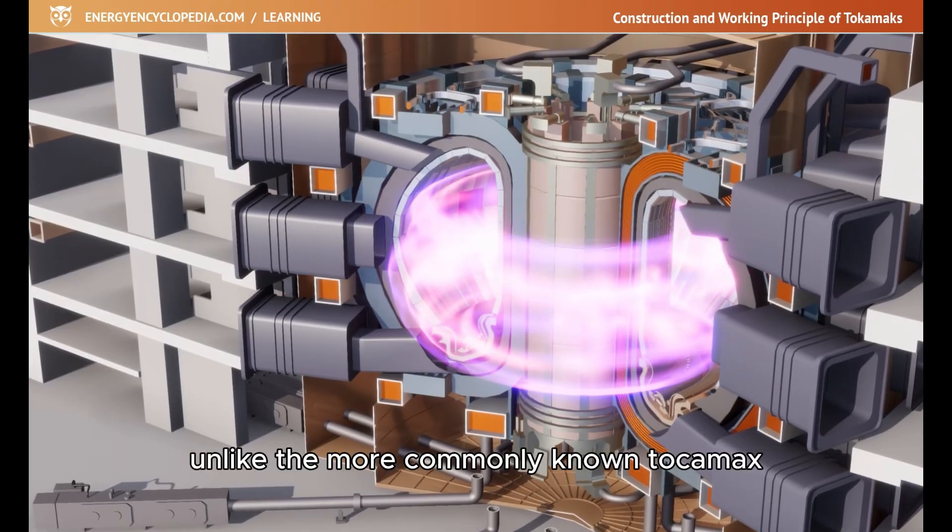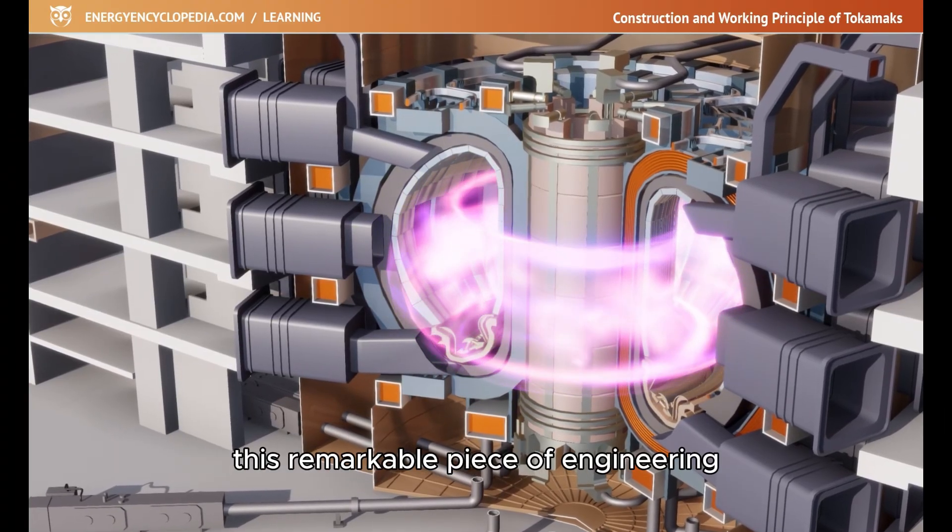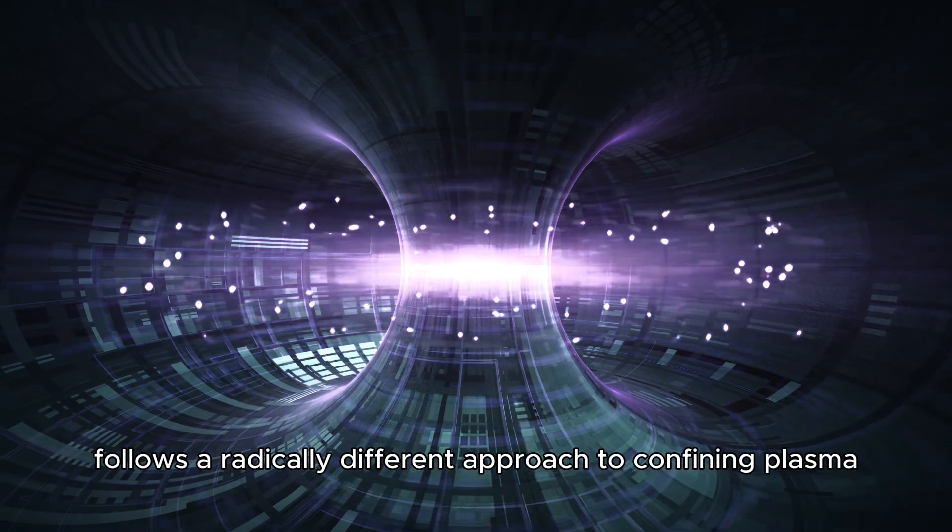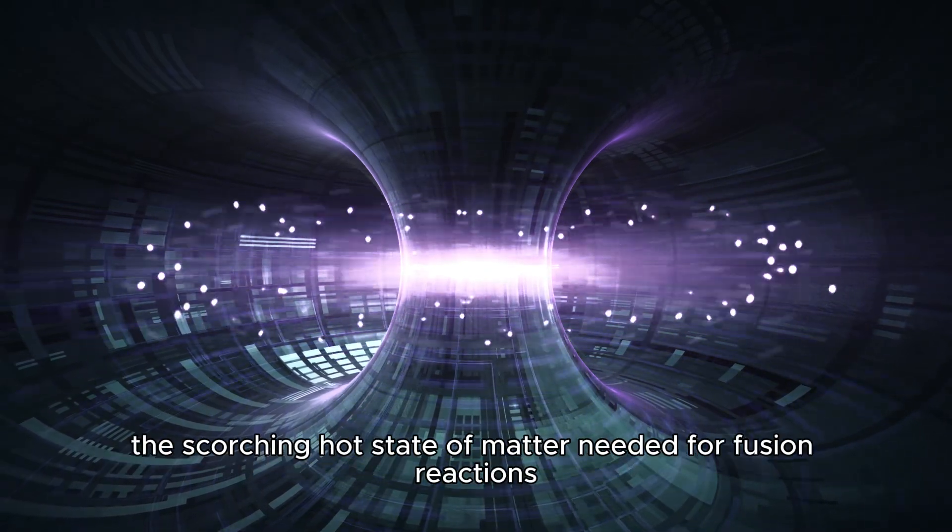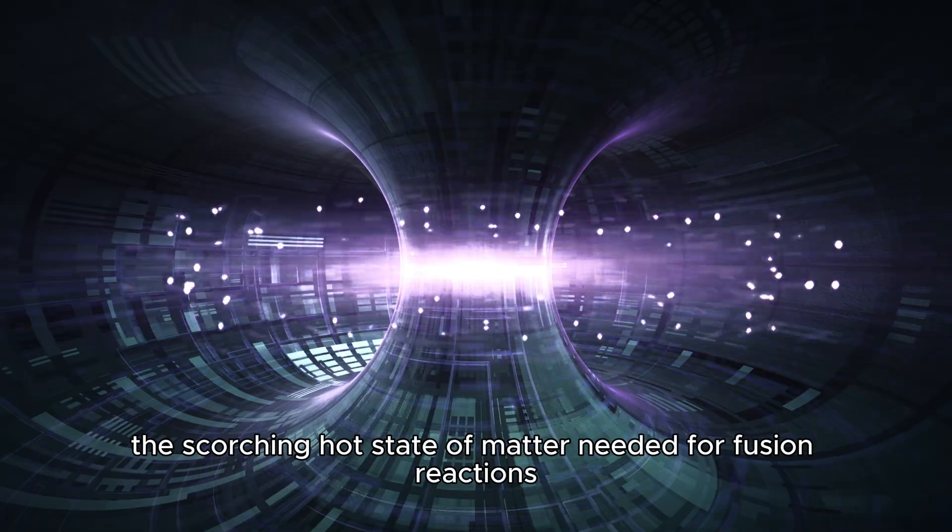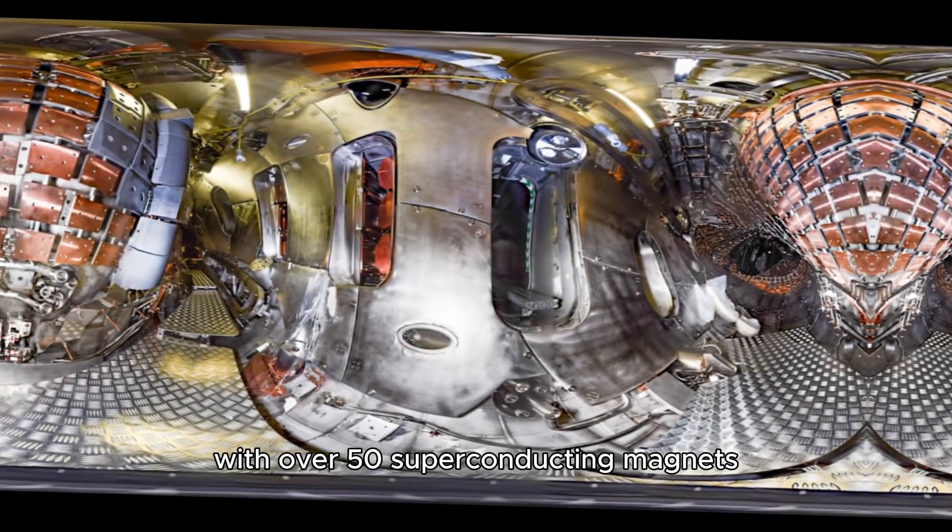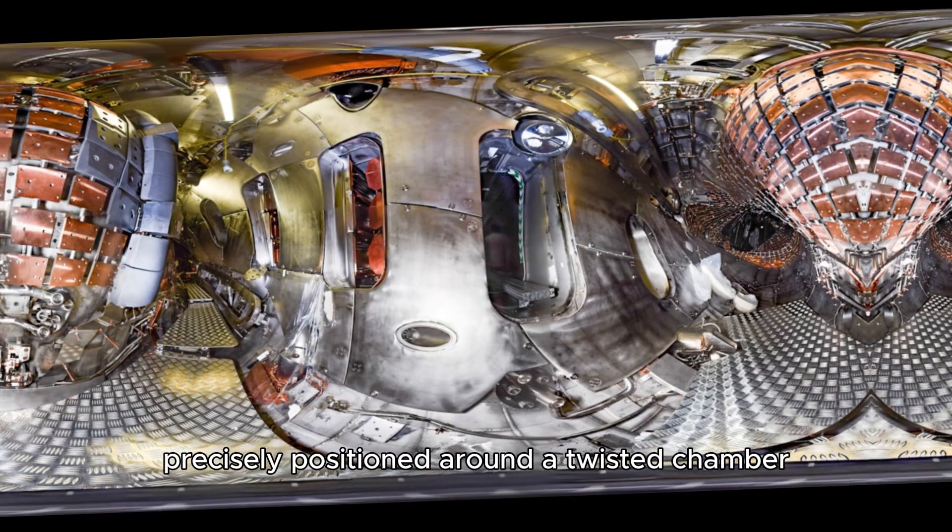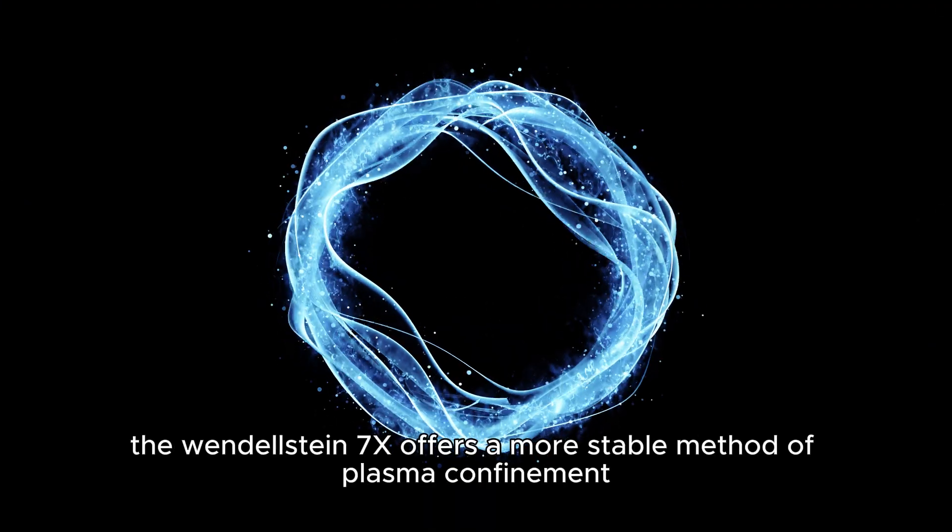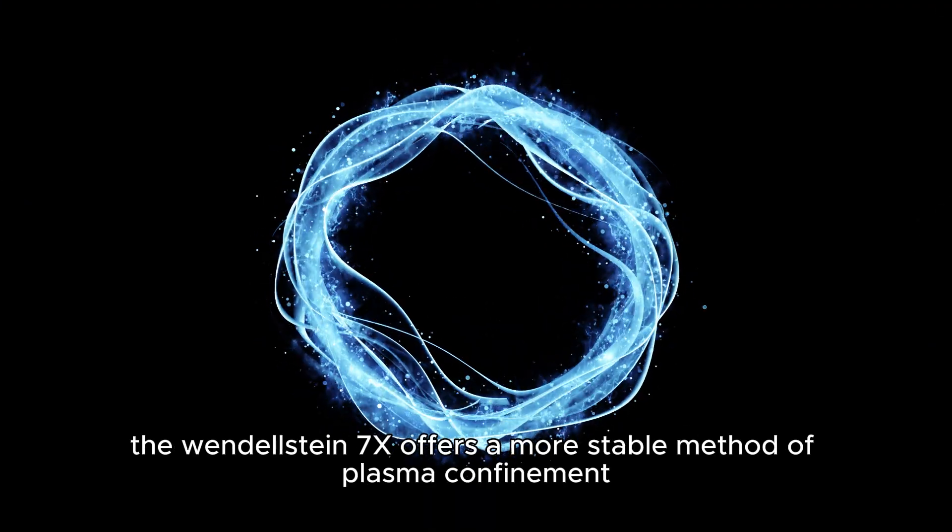Unlike the more commonly known tokamaks, this remarkable piece of engineering follows a radically different approach to confining plasma, the scorching hot state of matter needed for fusion reactions. With over 50 superconducting magnets precisely positioned around a twisted chamber, the Wendelstein 7X offers a more stable method of plasma confinement.